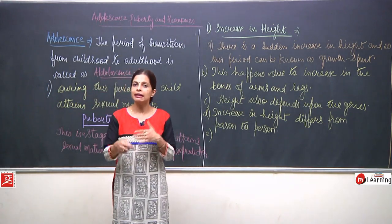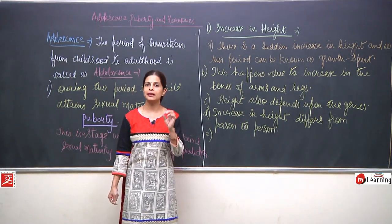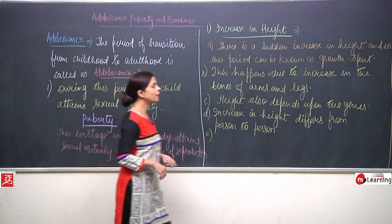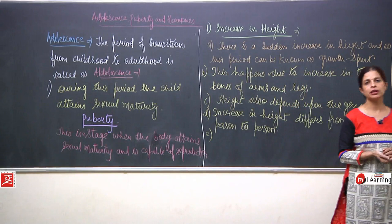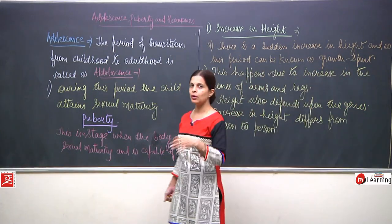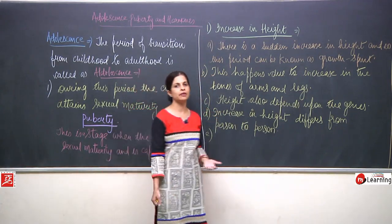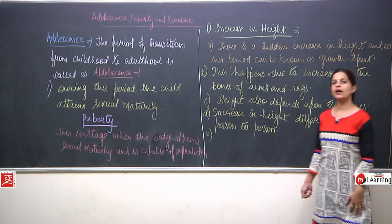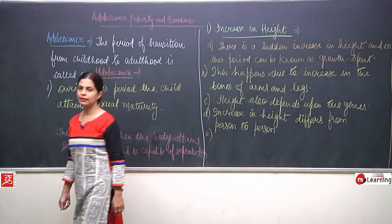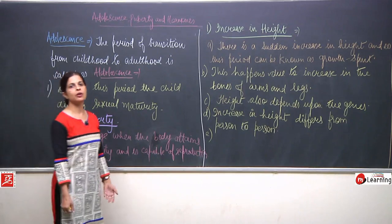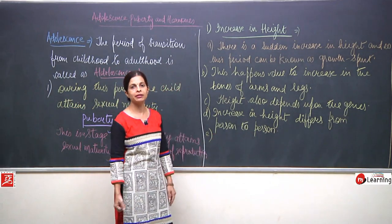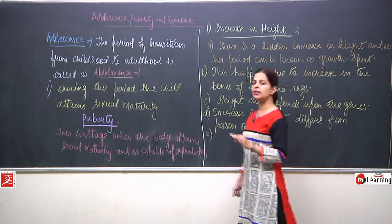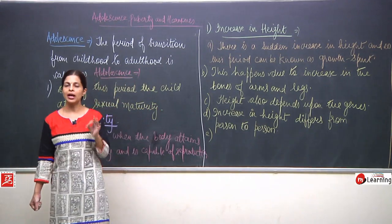Teenagers show an increase in height — this is the first characteristic feature of this stage. Before moving to the next point, one more thing: nowadays children depend more upon junk food. Once in a while junk food is okay, but avoiding a balanced diet is a problem. Balanced diet is very, very essential. Growth also depends upon diet.